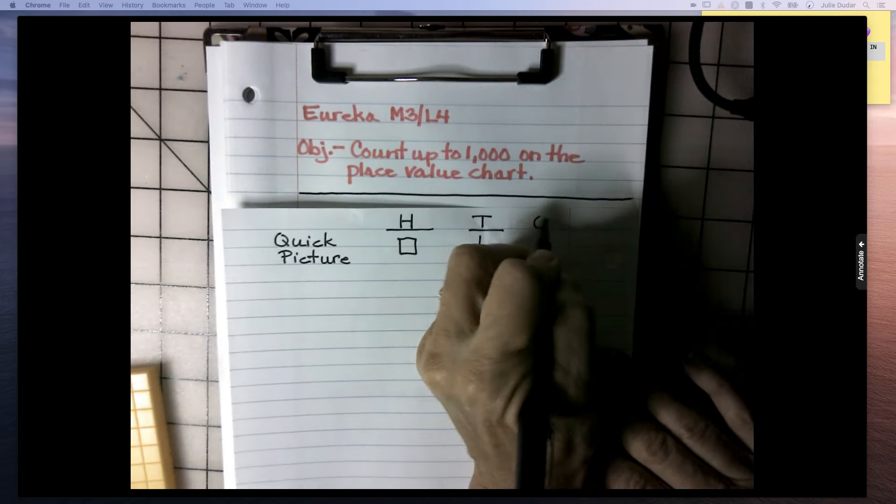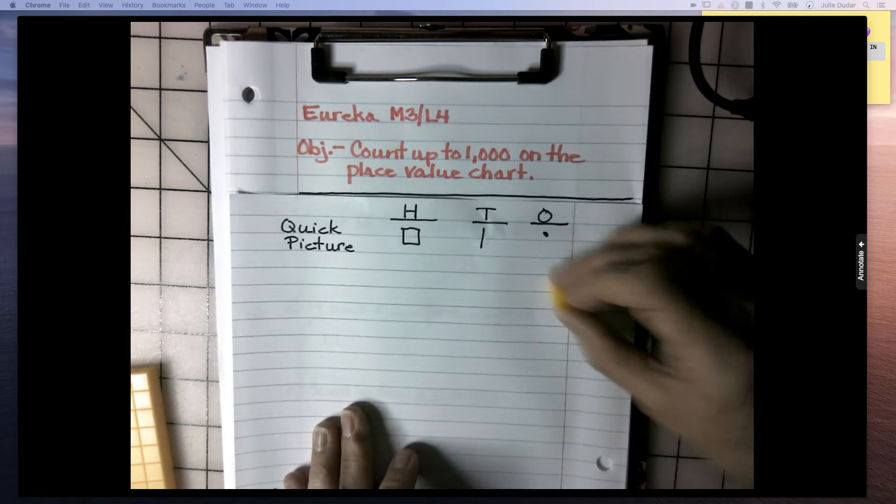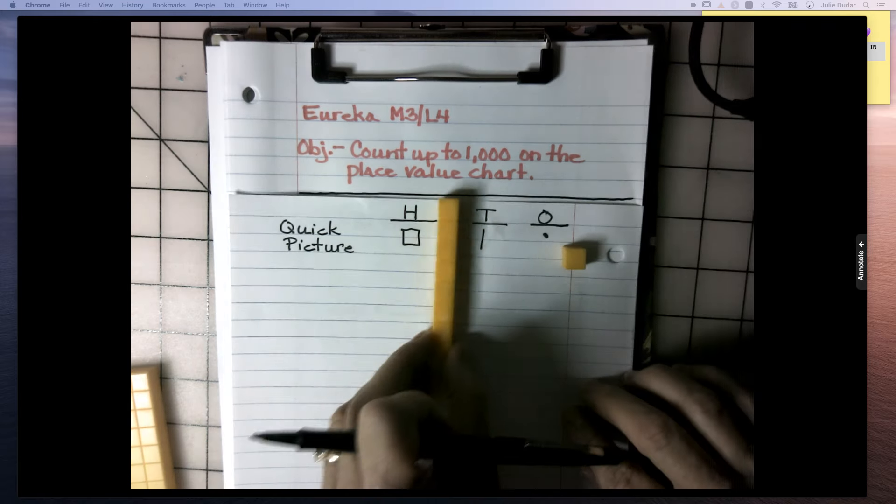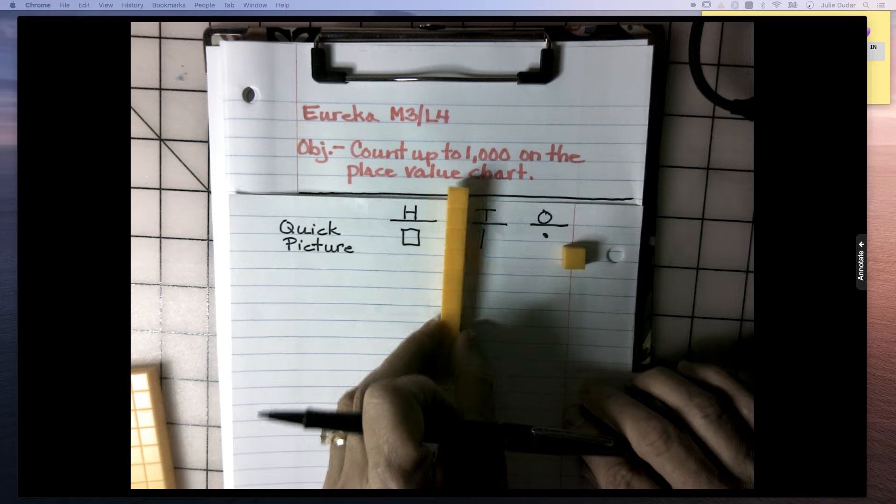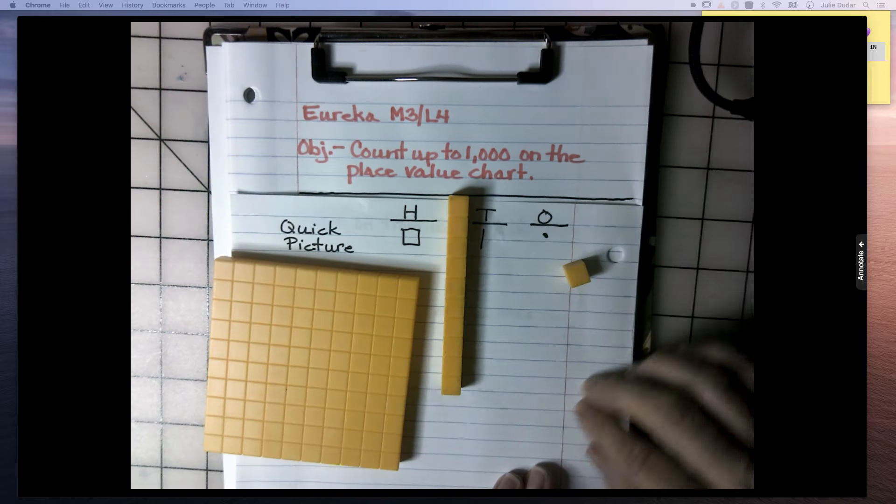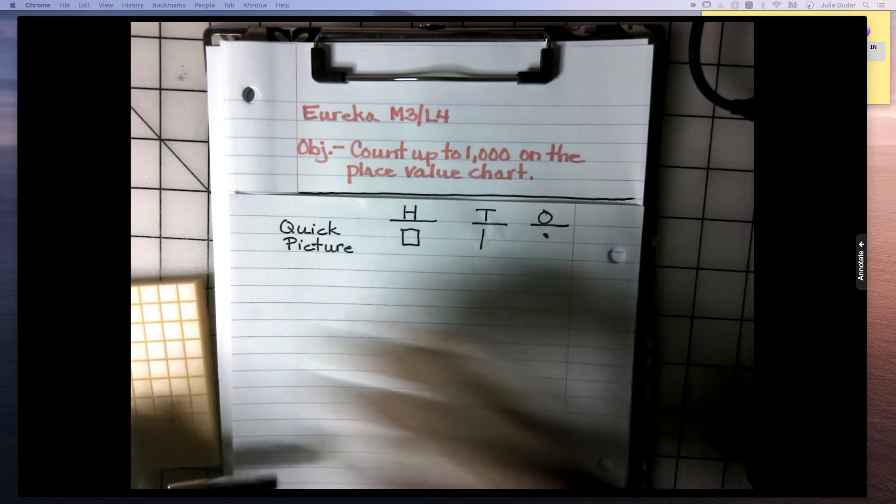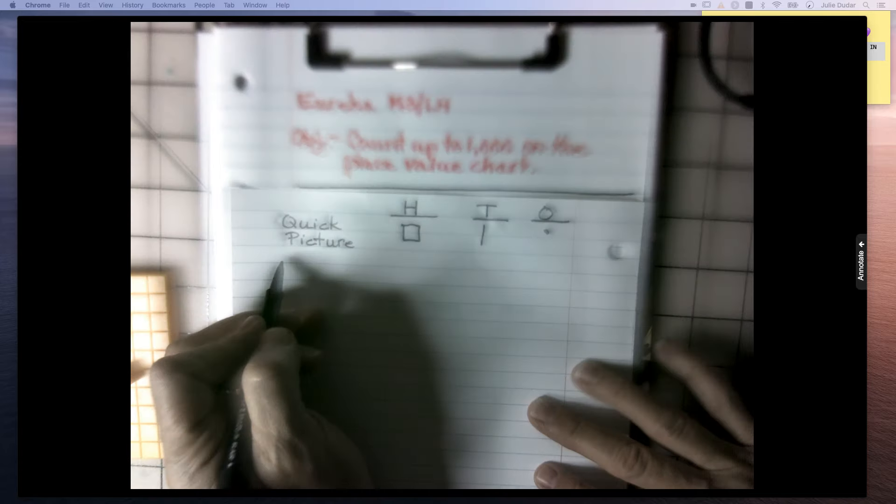And then for ones, we were doing a dot because it takes 10 dots to make a 10 stick. And if 10 tens makes 100, how many dots would make 100 or how many squares? So that's what we're doing.